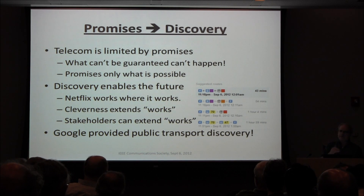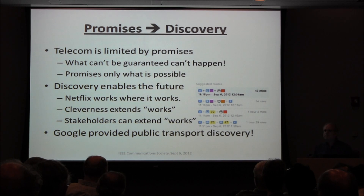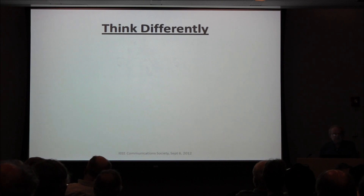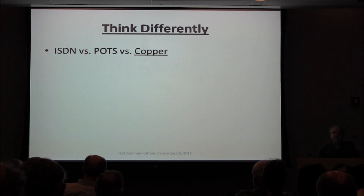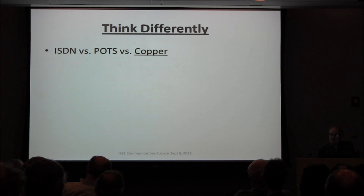Internet came from modems. The only reason we might depend on speed is it works too well — the biggest problem today is that it works too well, and people come up with all these magical things that assume it's going to work. ISDN — people know what it means? It actually worked, and in Europe it caught on. POTS is the analog plain-old telephone network. But there's also copper — we forget about copper.